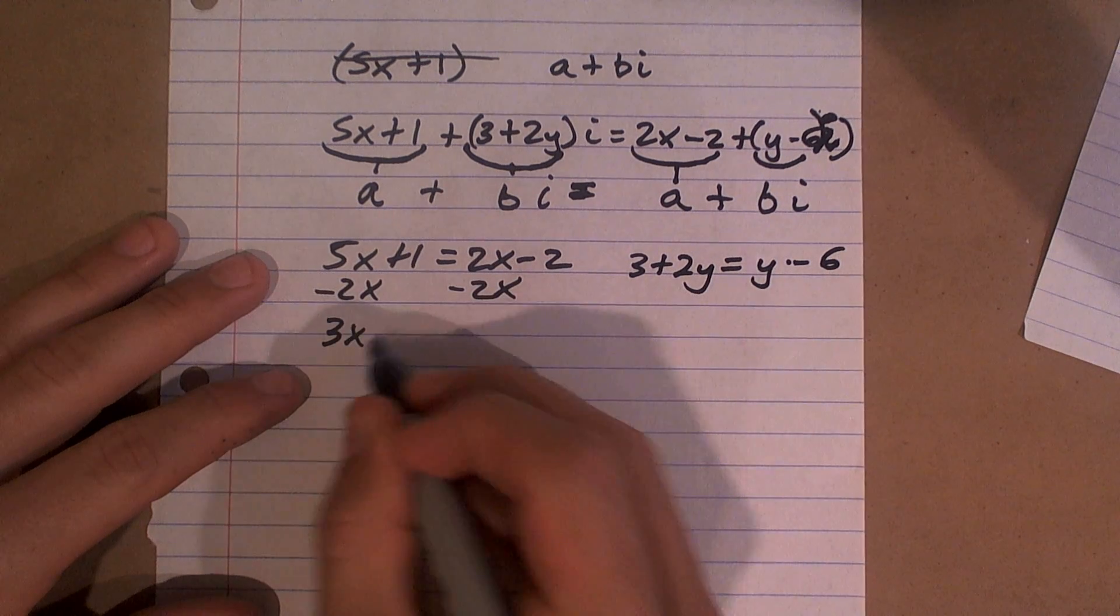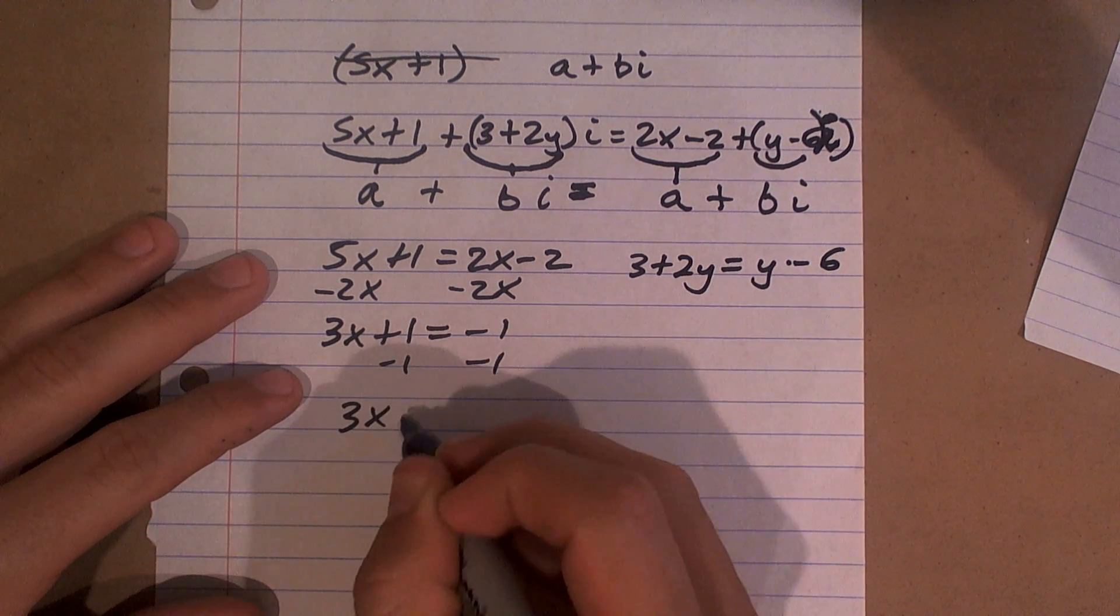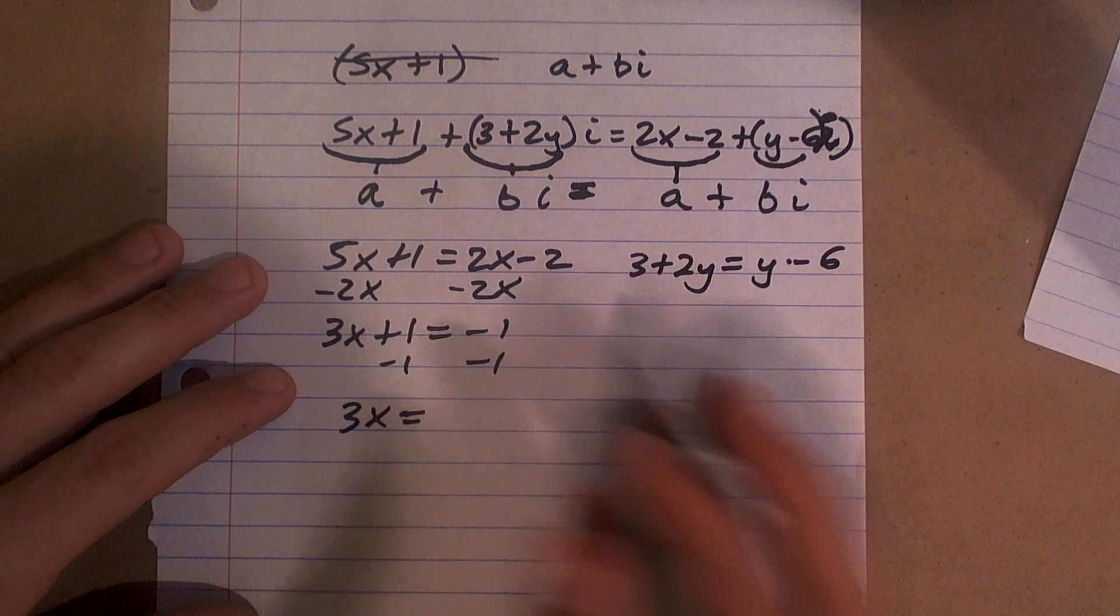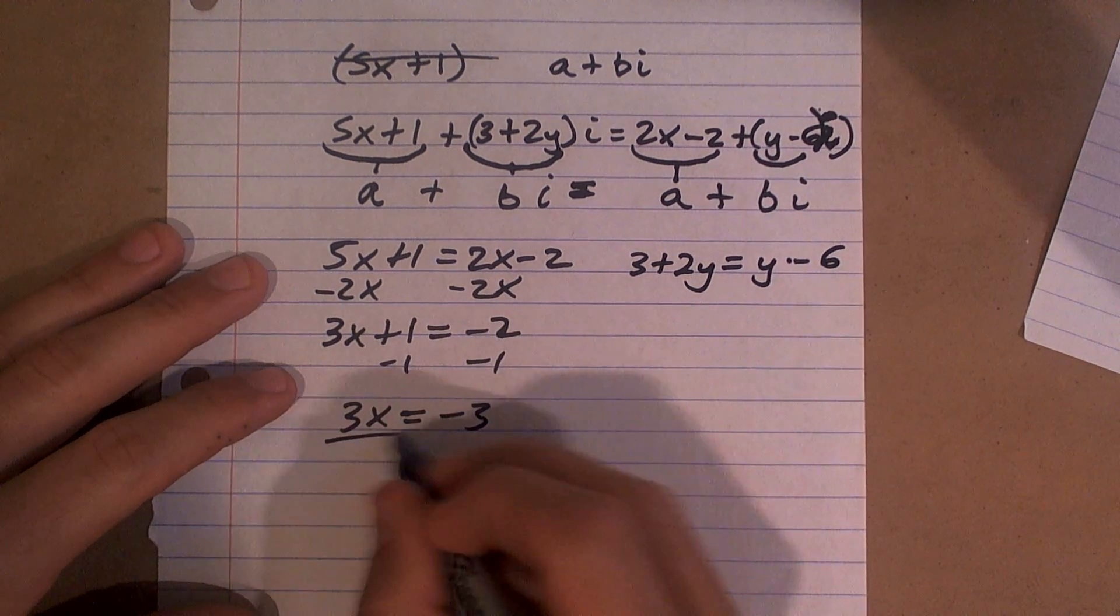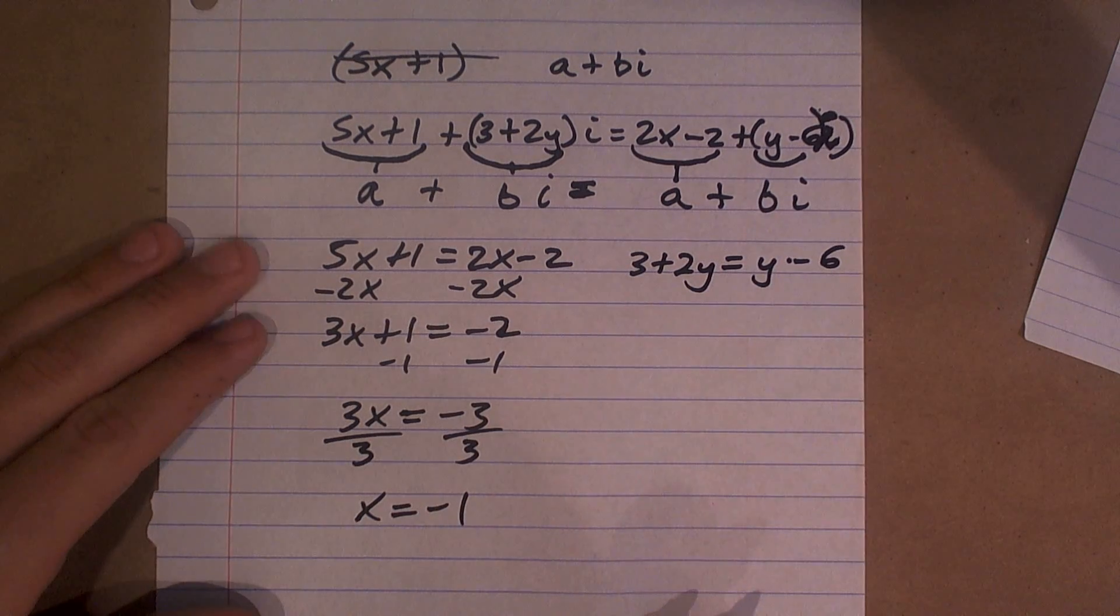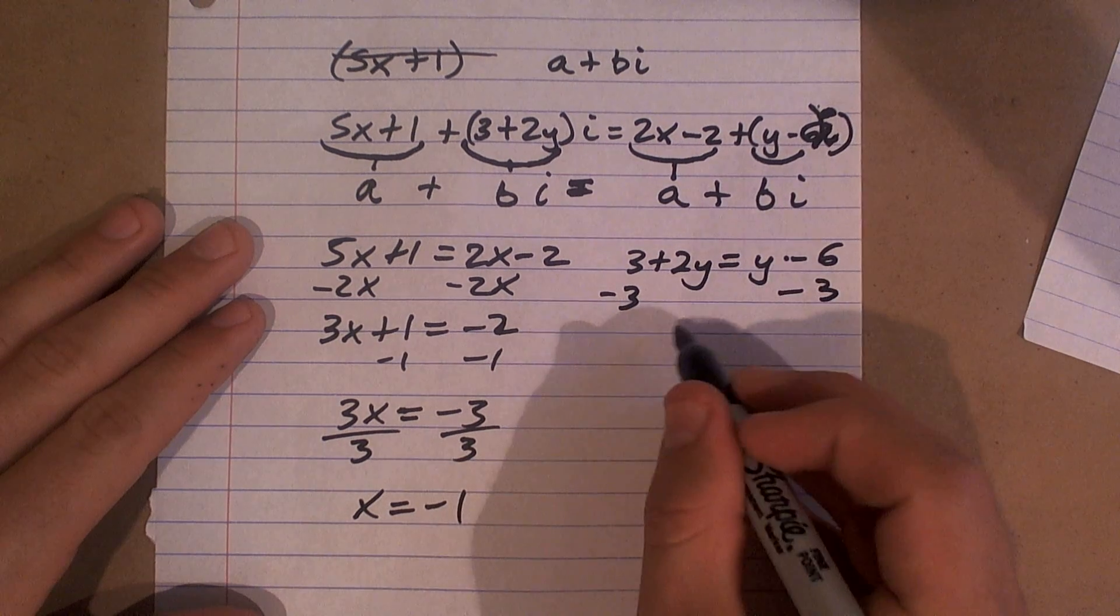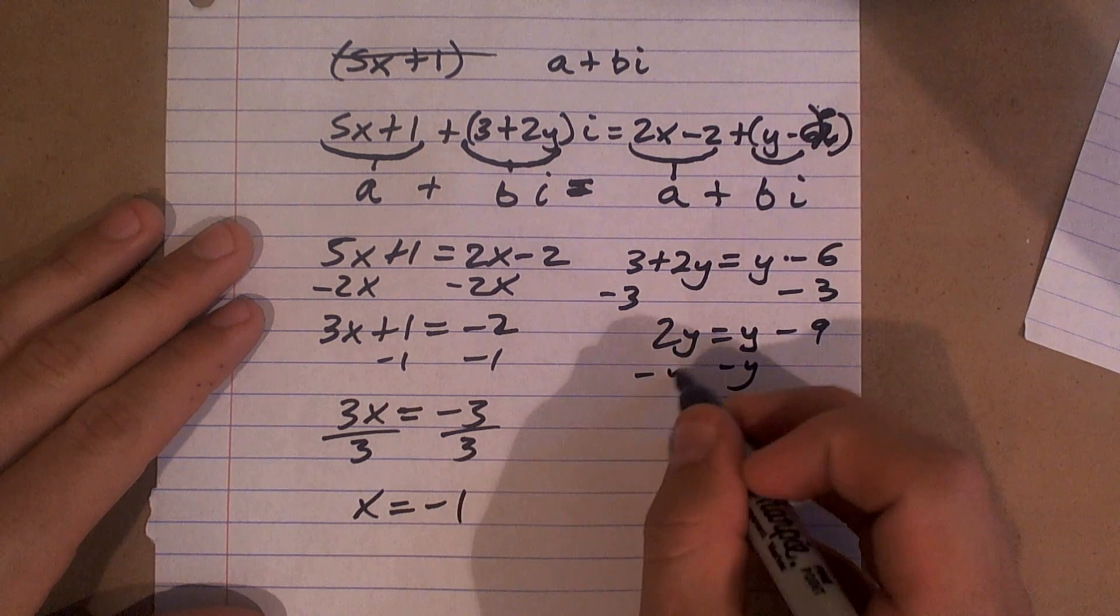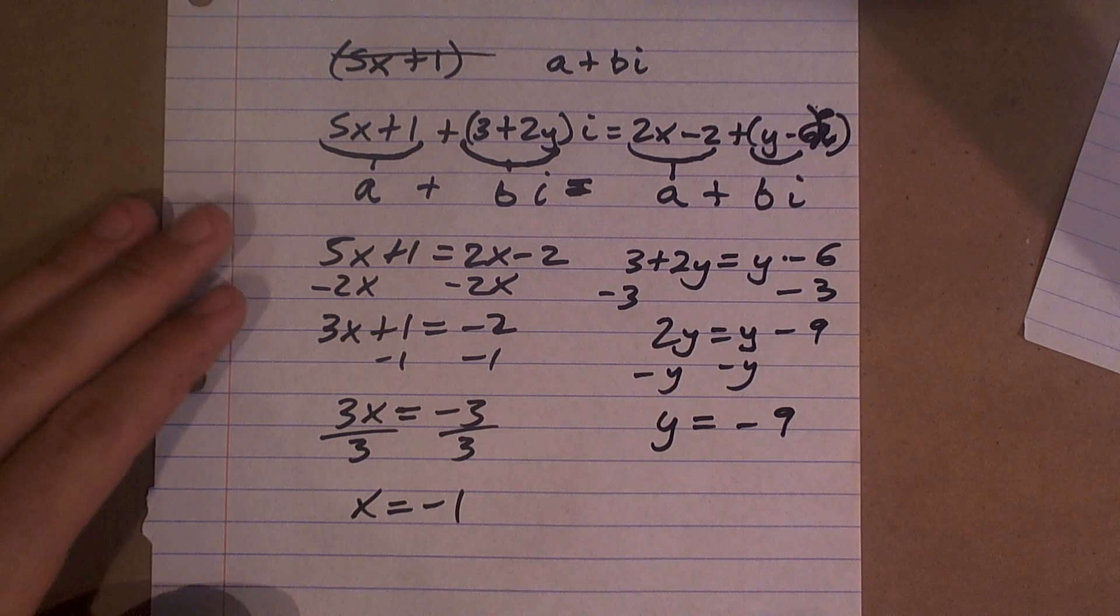Subtract the 2x on both sides I get 3x plus 1 equals negative 2, subtract 1, that's a negative 2 subtract 1 equals negative 3, x equals negative 1. Alright and then here I'll subtract a 3 so I get 2y equals y minus 9, subtract my y I get y equals negative 9. Okay does that make sense?